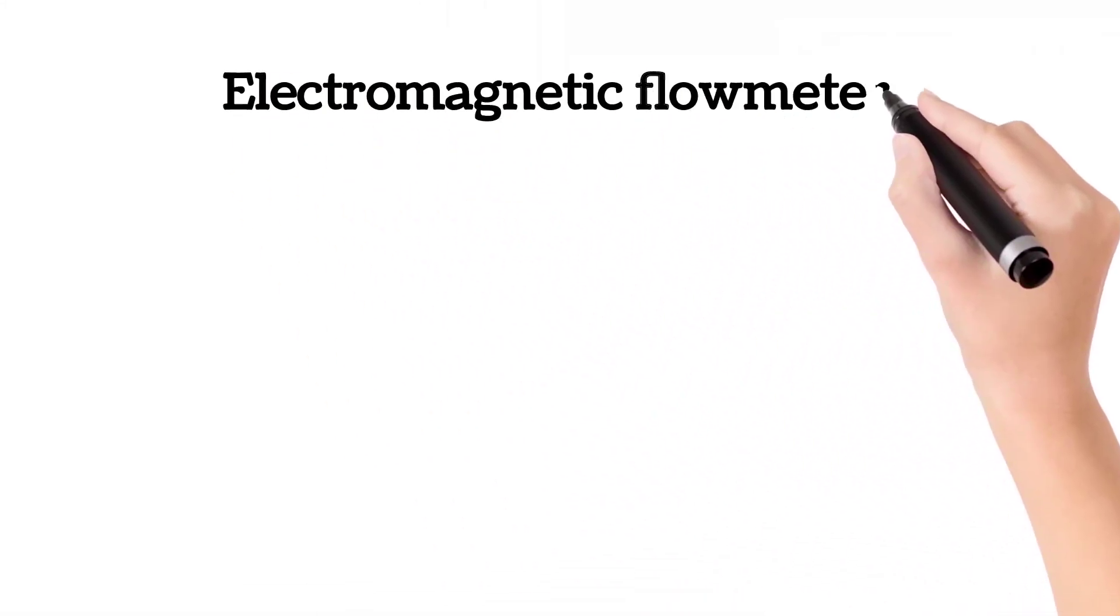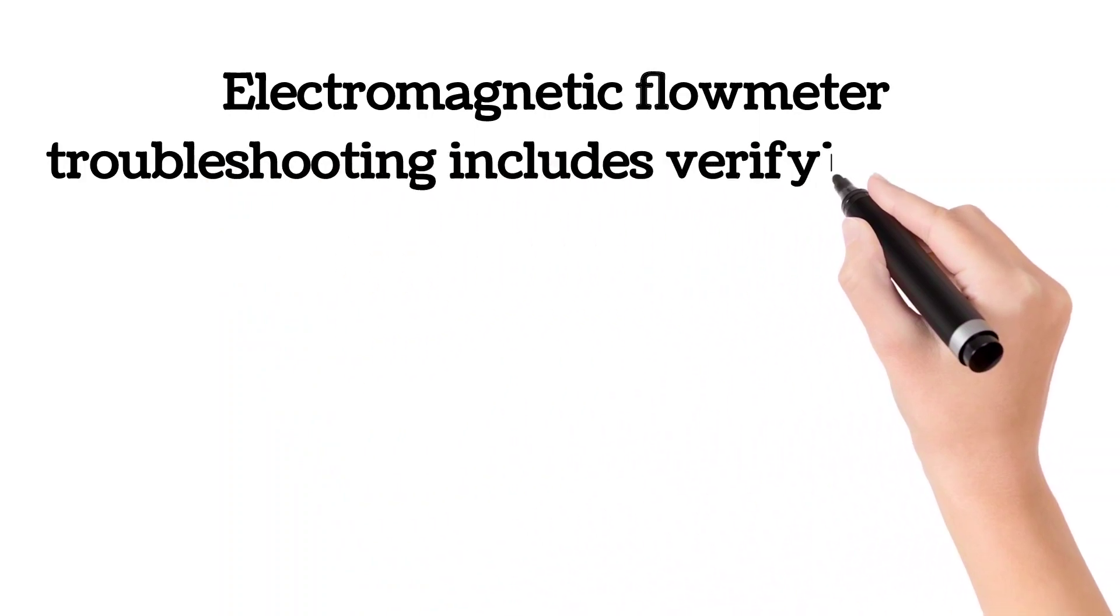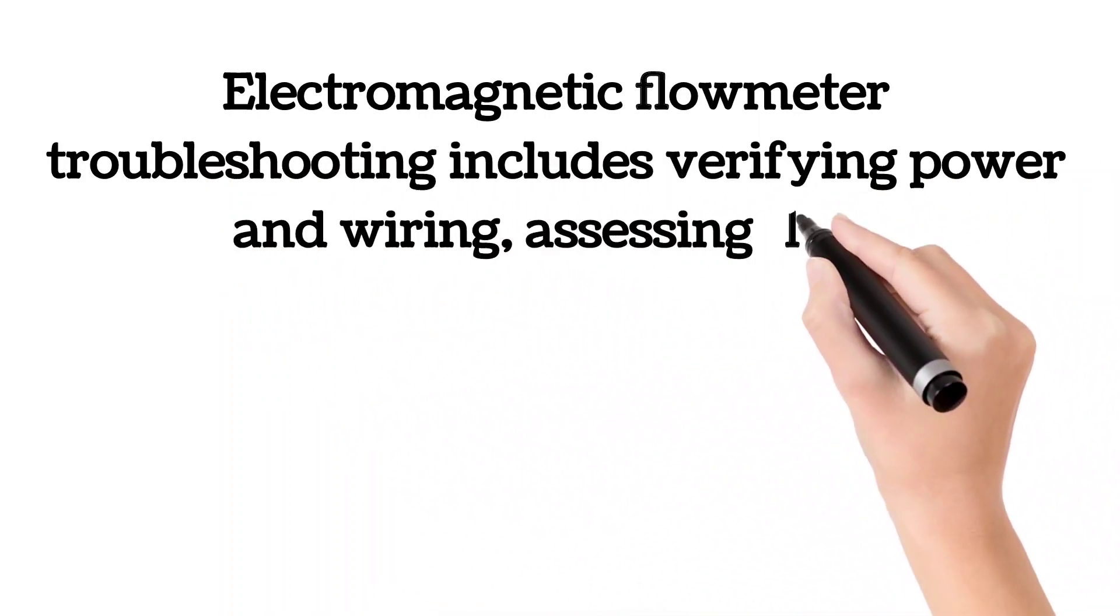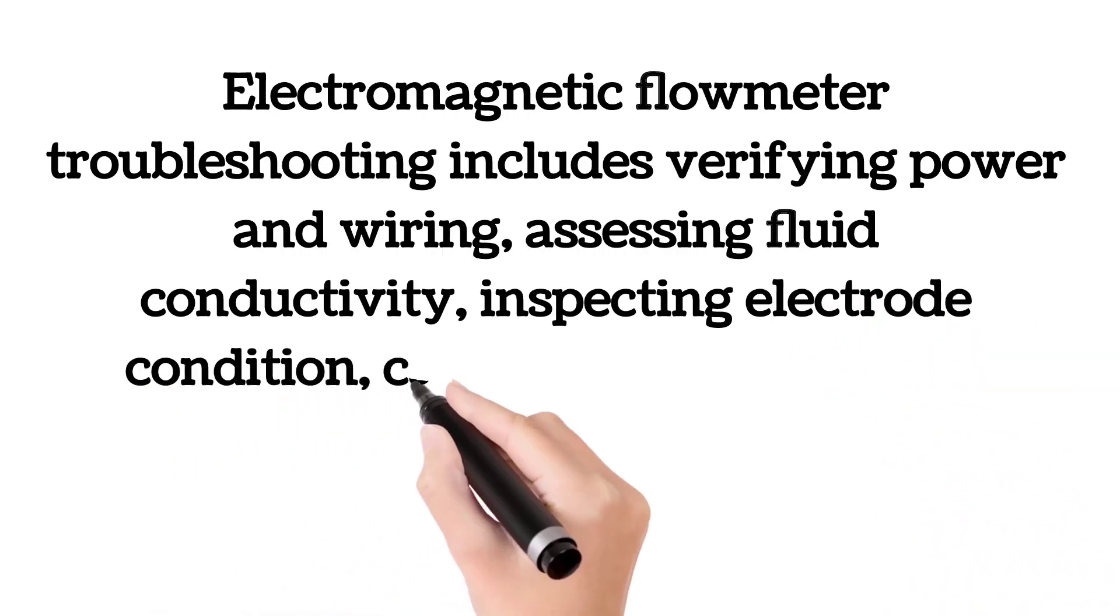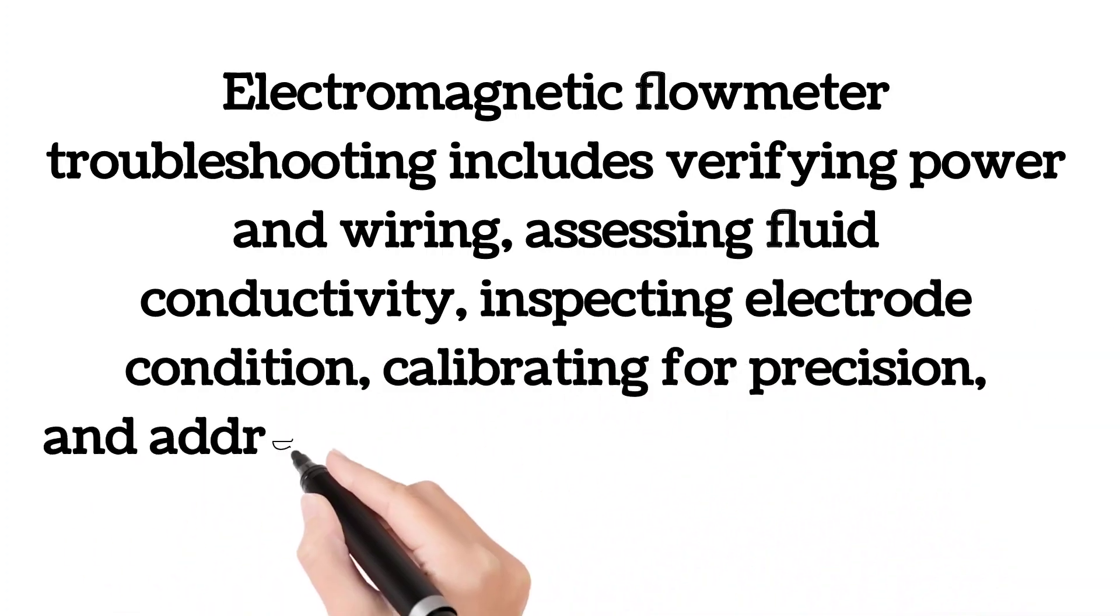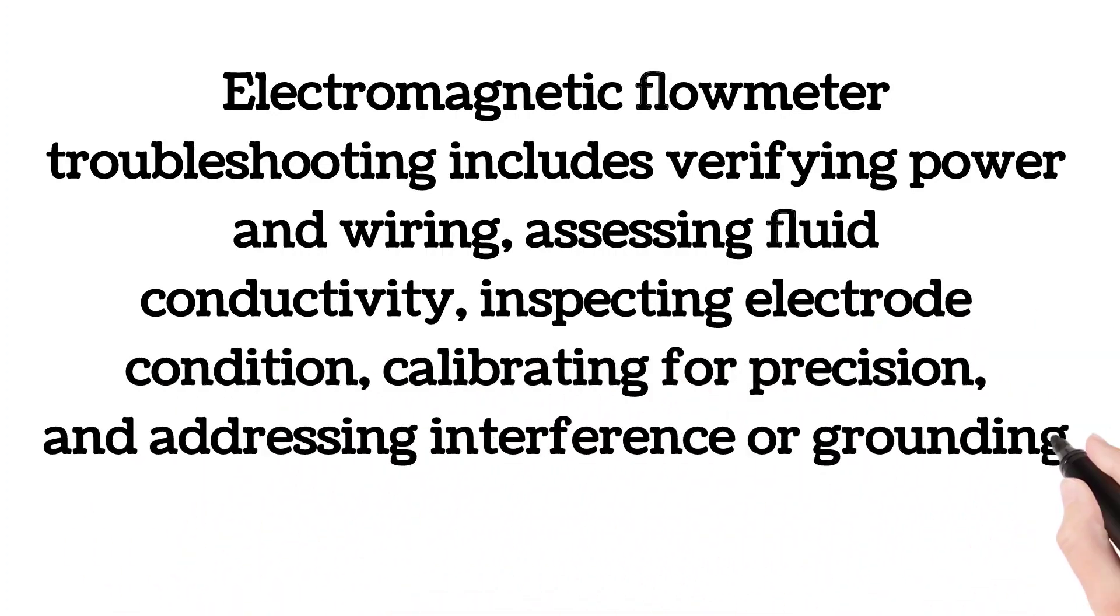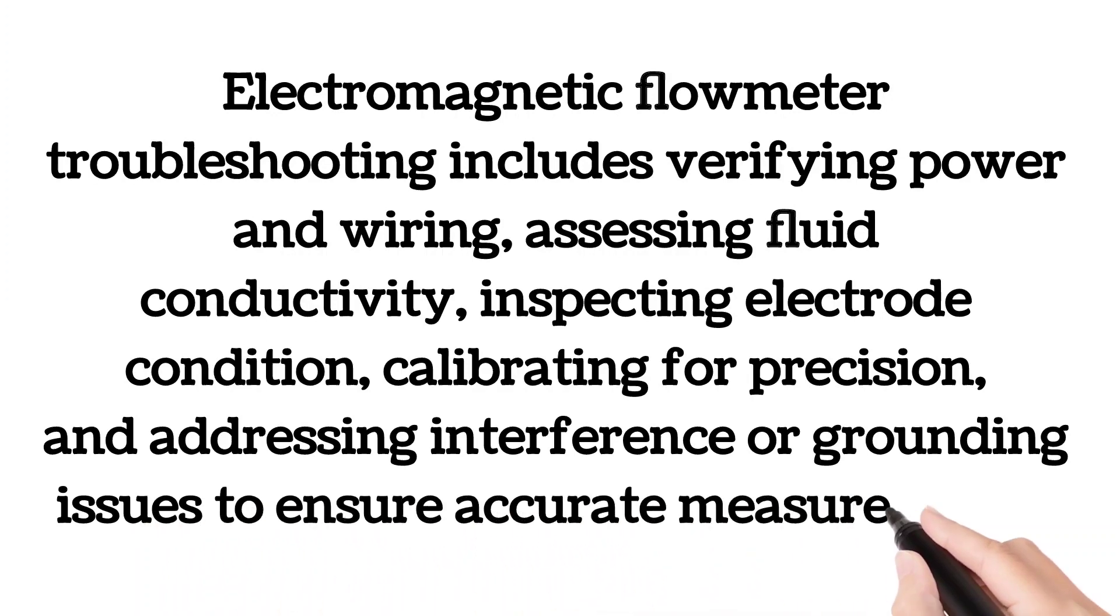Electromagnetic Flow Meter Troubleshooting includes verifying power and wiring, assessing fluid conductivity, inspecting electrode condition, calibrating for precision, and addressing interference or grounding issues to ensure accurate measurements.